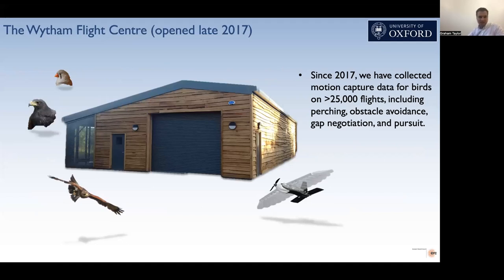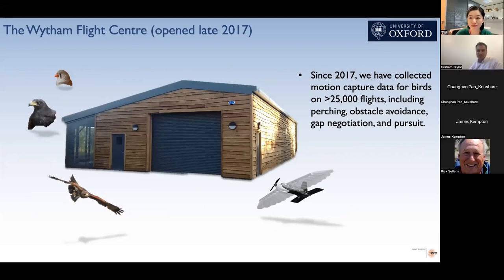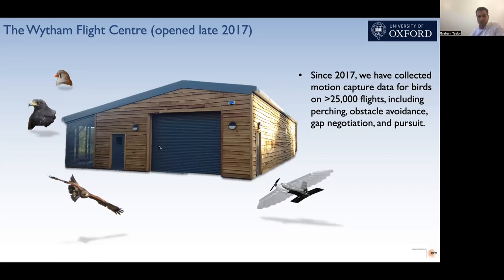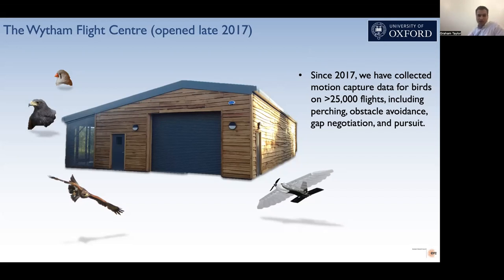To tackle these questions, it was necessary to create something that didn't exist already — the Whiteson Flight Centre, collecting data since 2017. It's a motion capture lab built specifically for birds and autonomous vehicles. It has aviaries on the left side where we keep our flying team of Harris Hawks, which will be the focus of much of today's talk, and also a colony of zebra finches. The key thing is that this facility has enabled us to collect a truly vast amount of biomechanical data — over 25,000 flights, including perching, obstacle avoidance, gap negotiation, and pursuit behaviours. This takes biomechanics into the era of big data and changes how we can analyse it.